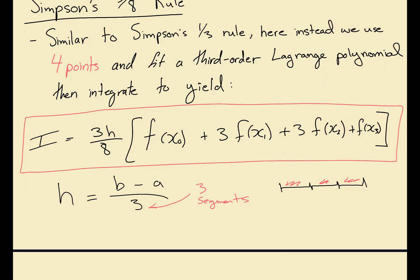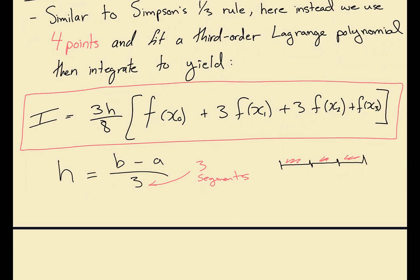The error here for the three-eighths rule is going to be proportional to the fourth derivative but the coefficient is slightly different than the one-third rule. So we have negative three over eighty times h to the fifth times the fourth derivative at psi, or if we plug in what h is we can write negative (b-a) to the fifth divided by 6480 times the fourth derivative.